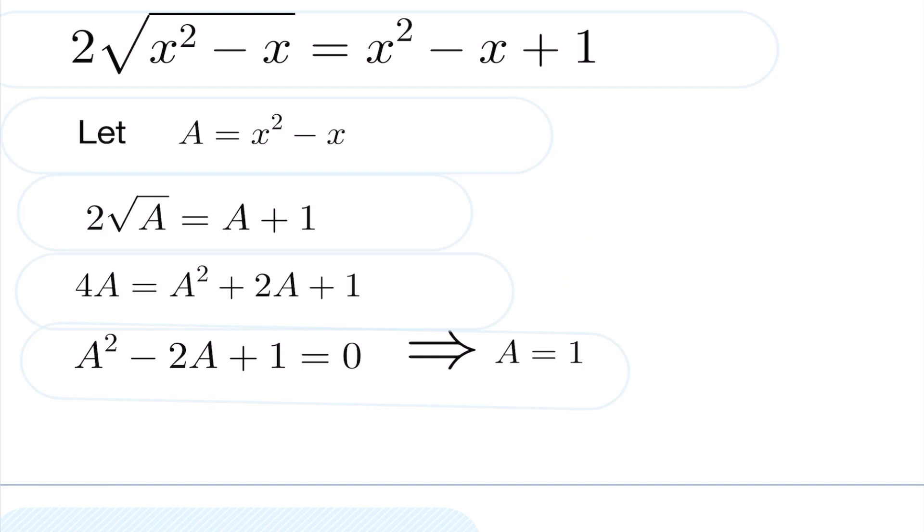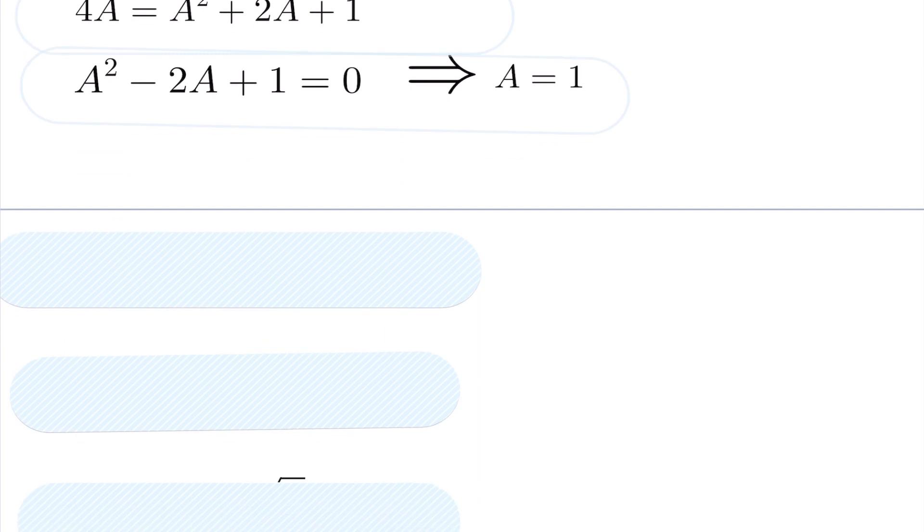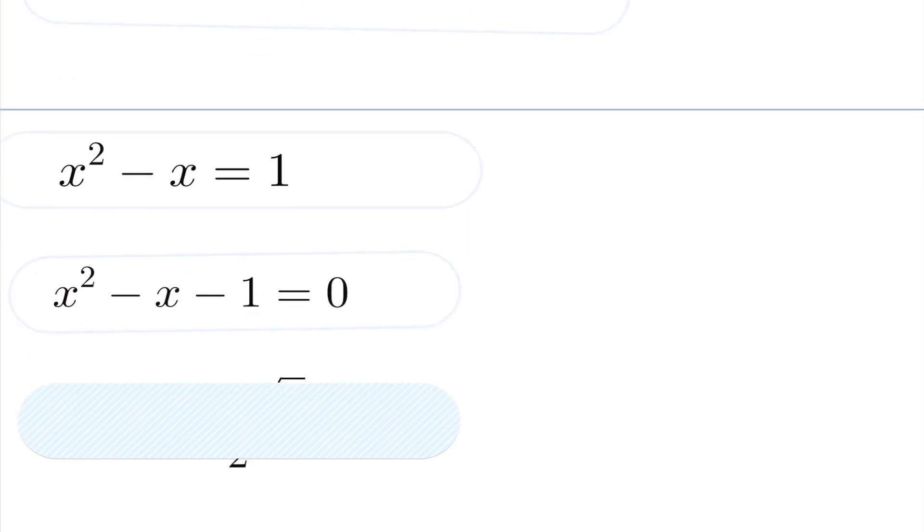Now that's not what we're looking to solve for. We're looking to solve for x, but I know that a is 1, which makes solving this much easier. If you recall, I let a equal x squared minus x. So now we set that equal to 1, bring it to one side, and use our quadratic equation, and we have our final answer. So we have two values here, 1 plus or minus the root of 5 over 2.